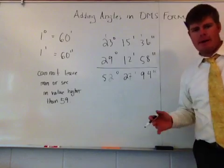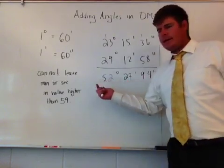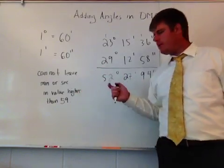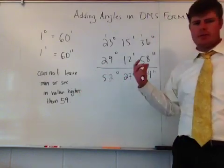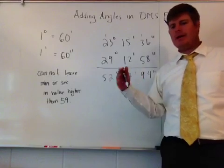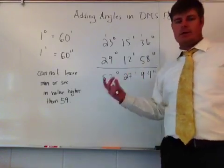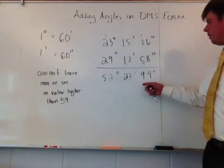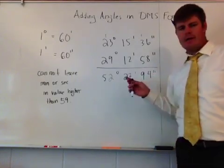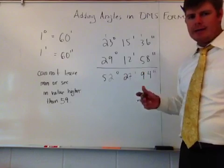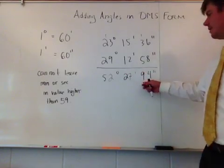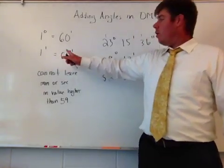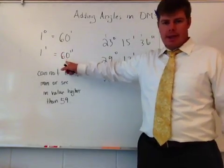Now we have to come back and check. Rule of thumb: in the seconds and minutes, if you subtract 60 from it and it makes a negative number, then it's good. If you can subtract and make a positive, then it's not good. In this case, I'm going to look over here—one minute is 60 seconds.